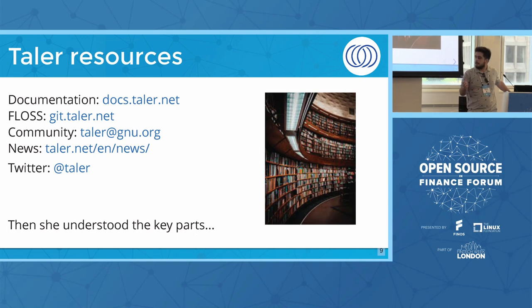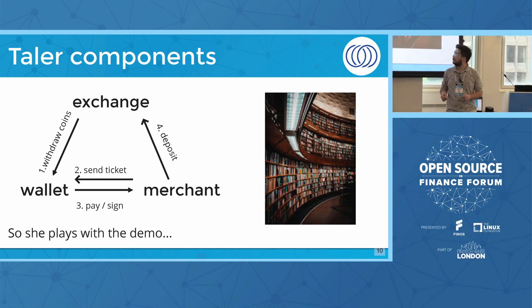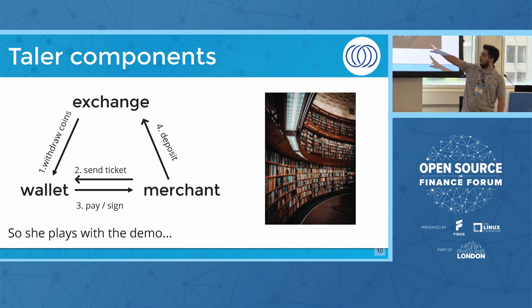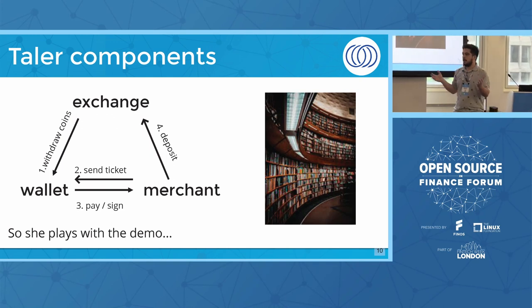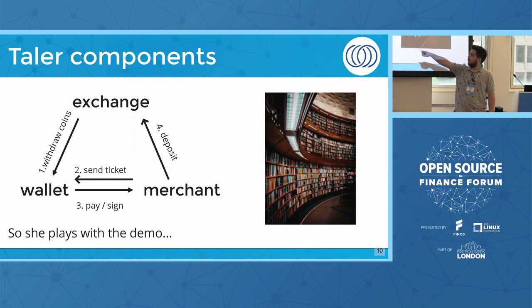Reading through the documentation, she understood the key components of the system. The key components — I'm going to talk about just a few of them because there are more — are the exchange, the wallet, and the merchant.